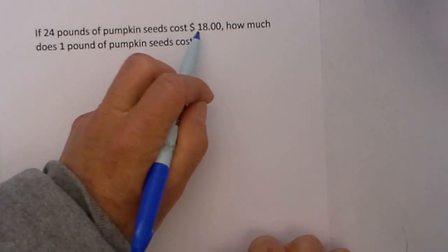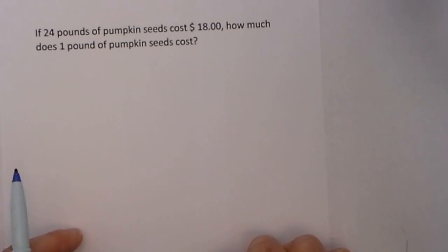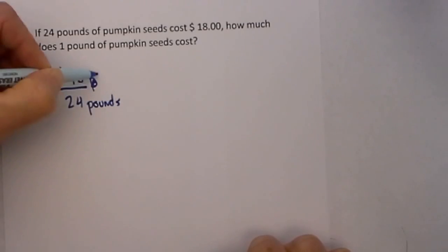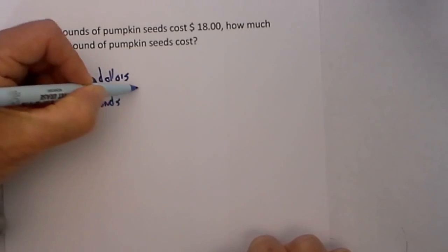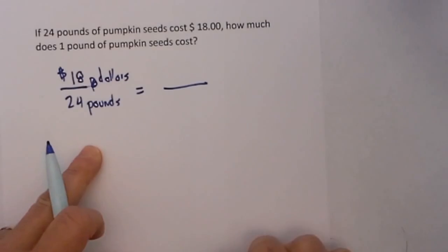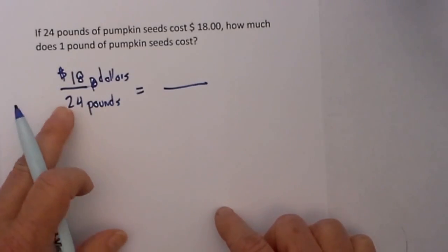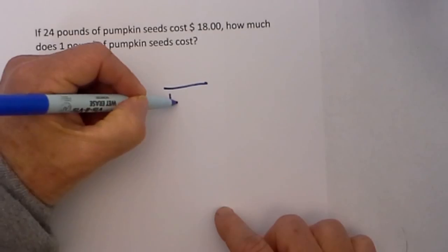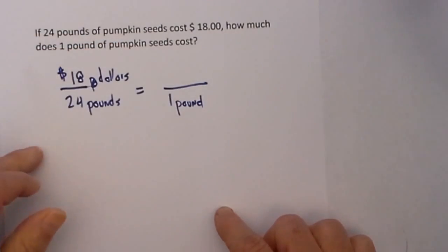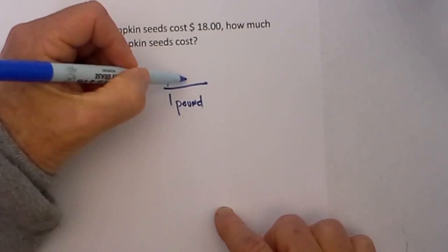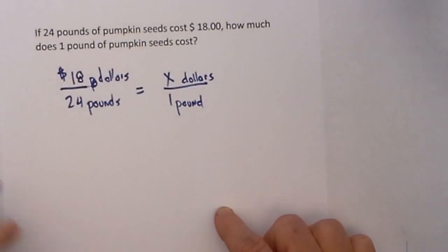If 24 pounds of pumpkin seeds cost $18, how much does 1 pound of pumpkin seeds cost? Let's set up a fraction. So we have $18 equals 24 pounds. Set it to 1 and remember to place the same unit. So we have 1 pound and we are trying to find how much 1 pound costs.